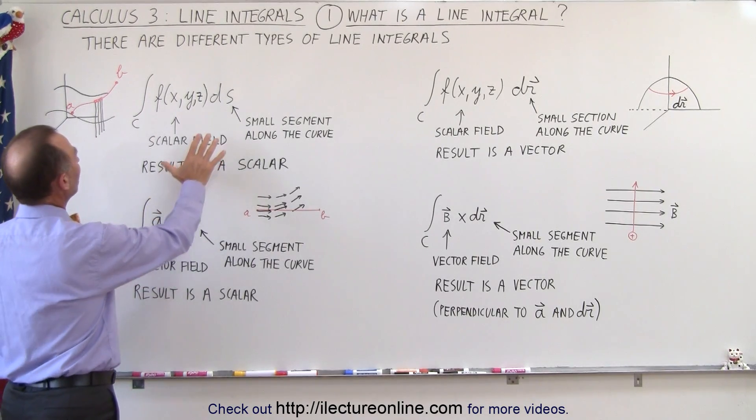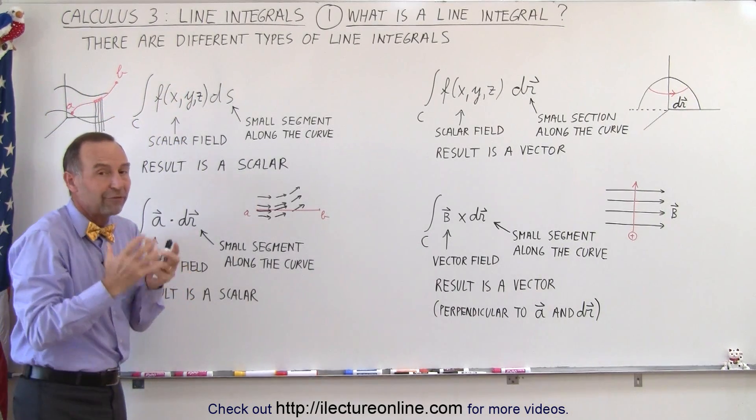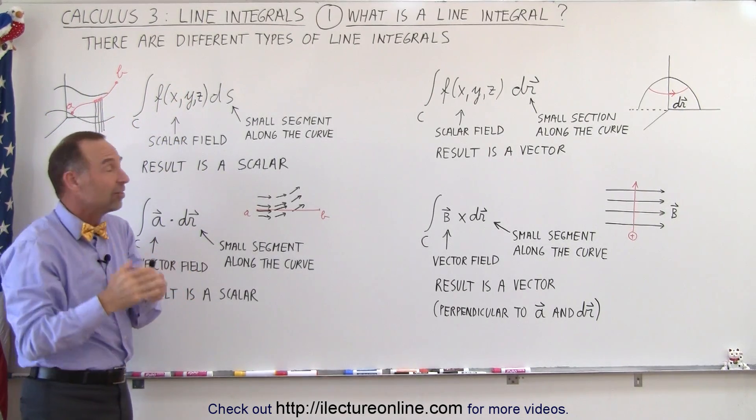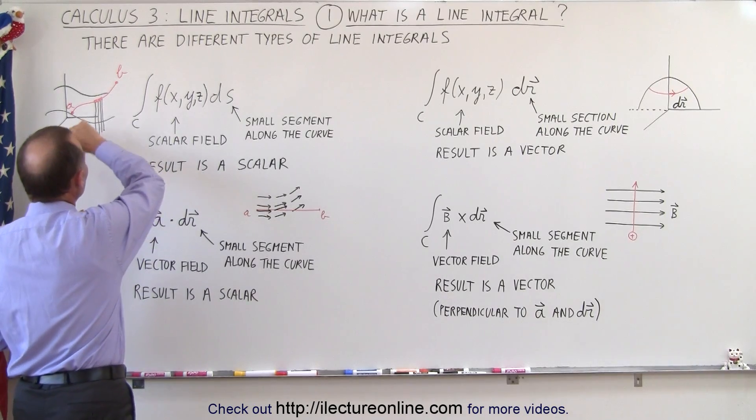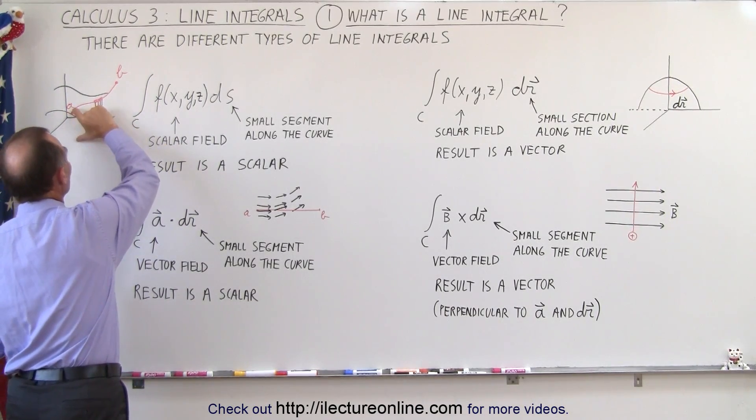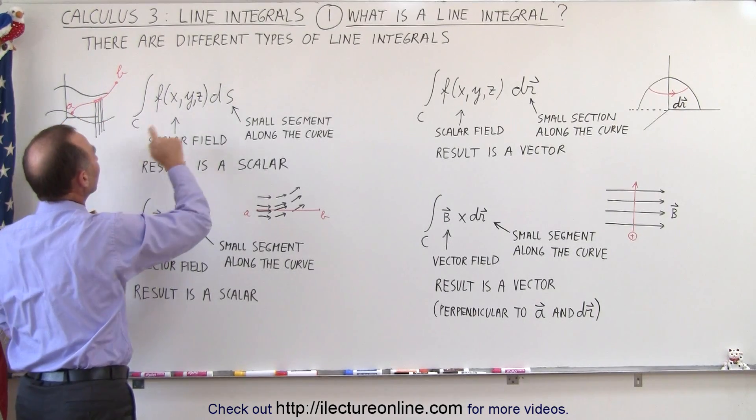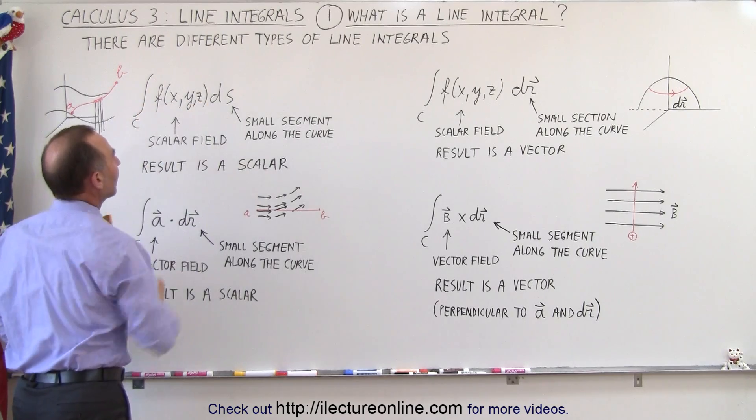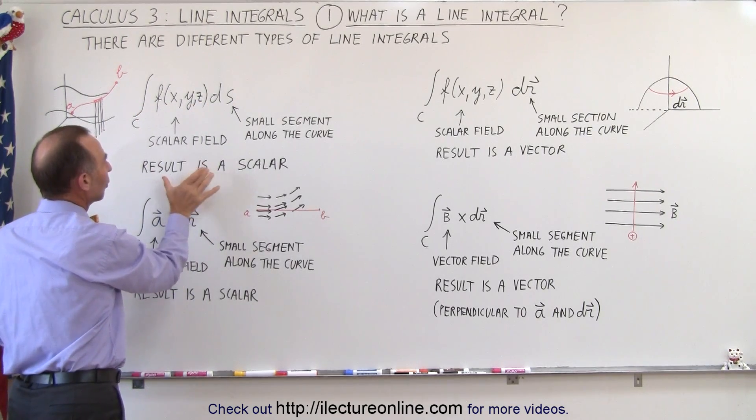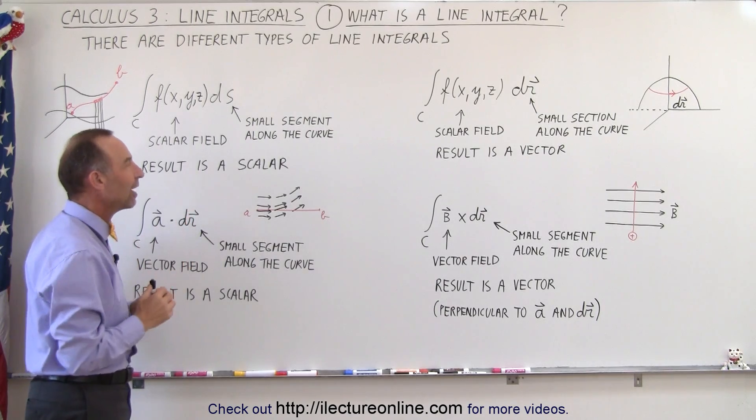So here we have an example where we have a scalar field, for example, a surface which is a function of the position x, y, and z. And then we're going to travel along that surface. So we're going to evaluate the value of that surface along the path that we take and sum all those values together and that's what we call a line integral. The result of that is that we're going to end up with a scalar value. We'll see later what that scalar value signifies.